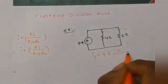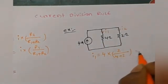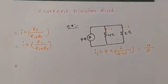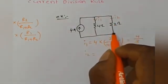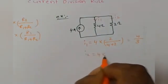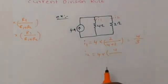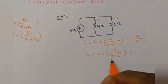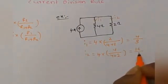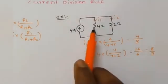I1 equals total current 4 amperes multiplied by the opposite resistance 2 ohms, divided by total resistance 4 plus 2, which gives 8 by 6, equal to 4/3 amperes. For I2, total current 4 amperes multiplied by the opposite resistance 4 ohms, divided by 4 plus 2, which gives 16 by 6, equal to 8/3 amperes.